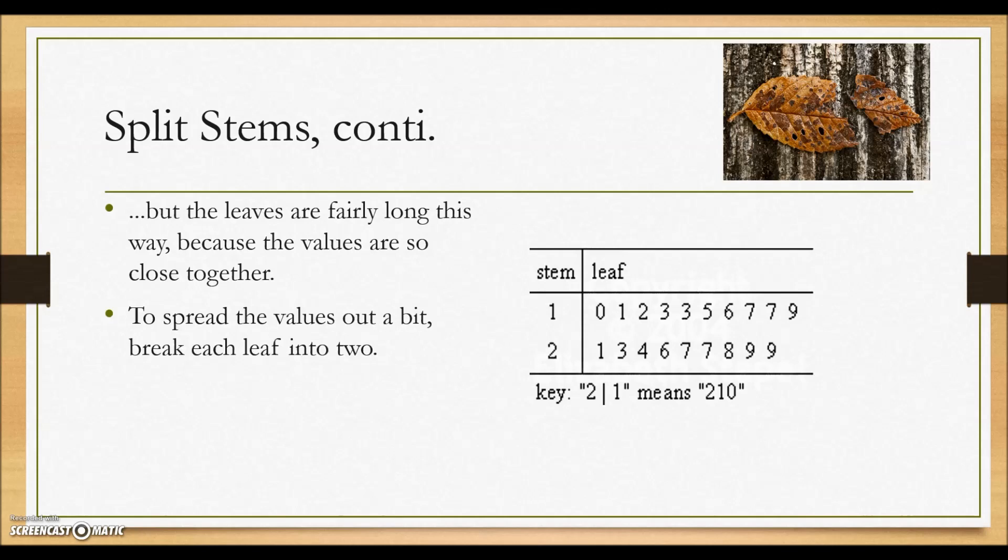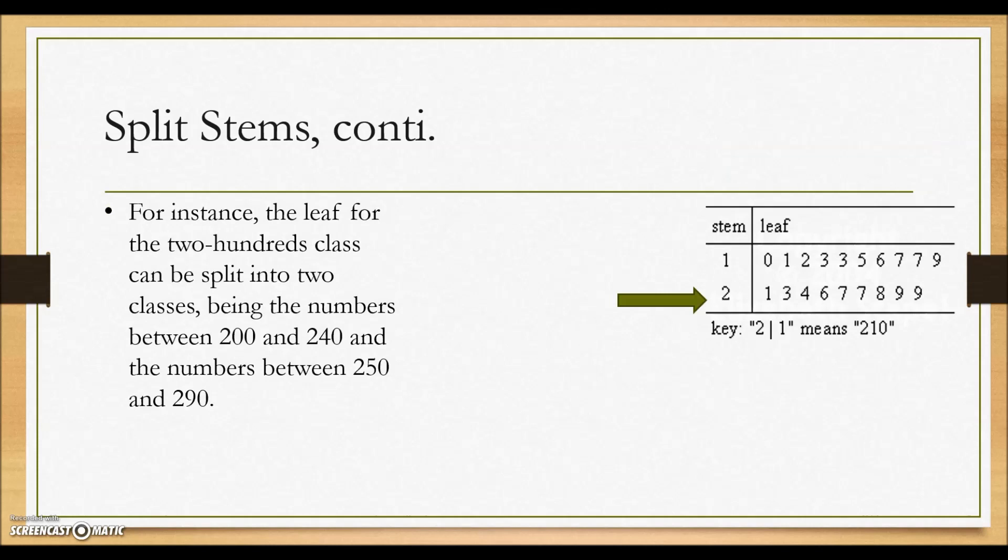To spread the values out a bit, we're going to break each leaf into two. That means our intervals are going to be split. The leaf for the 200s class will be split into two classes being the numbers between 200 and 240 and the numbers between 250 and 290. The new plot will look like this.